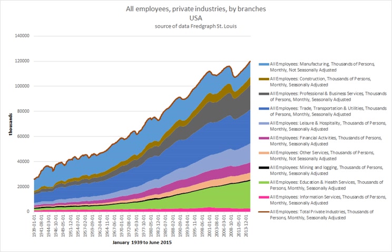The main ways for employers to find workers and for people to find employers are via job listings in newspapers and online, also called job boards. Employers and job seekers also often find each other via professional recruitment consultants which receive a commission from the employer to find, screen and select suitable candidates. However, a study has shown that such consultants may not be reliable when they fail to use established principles in selecting employees.